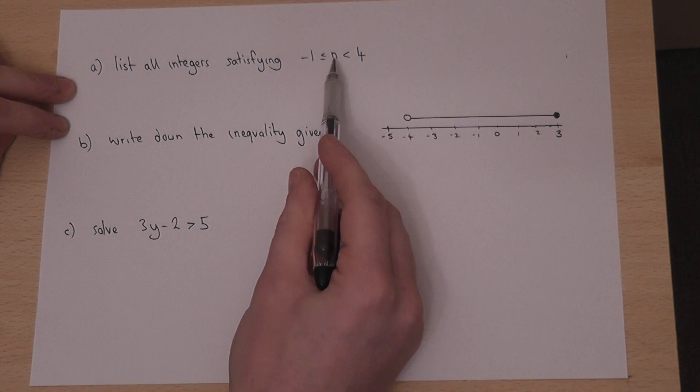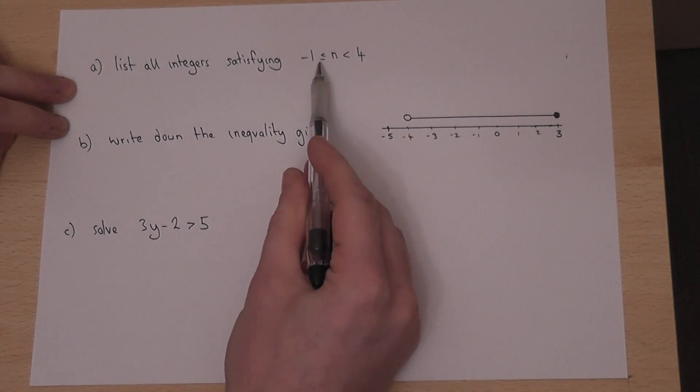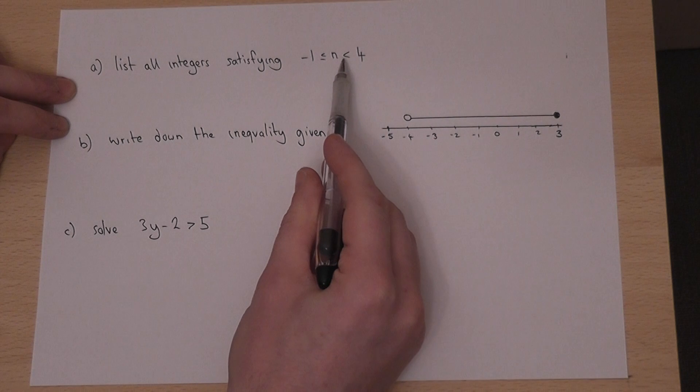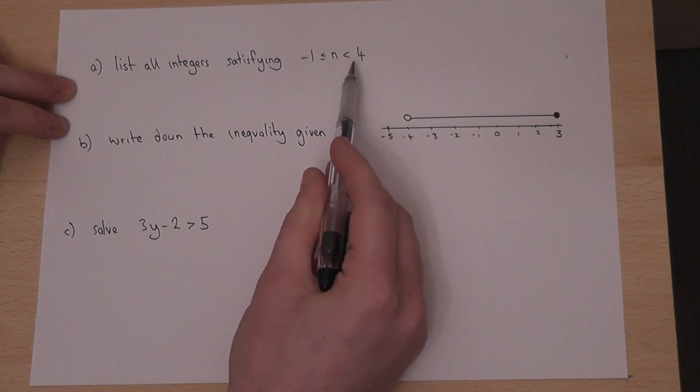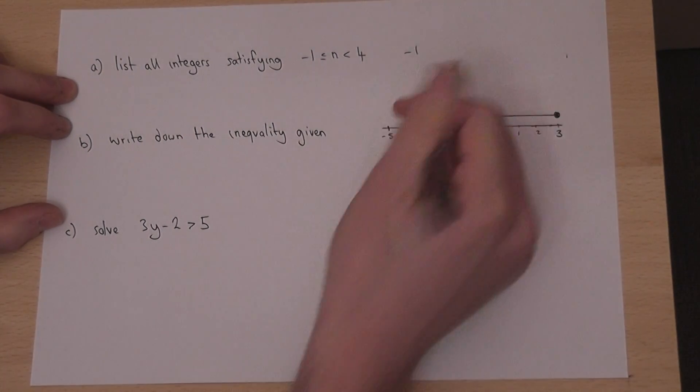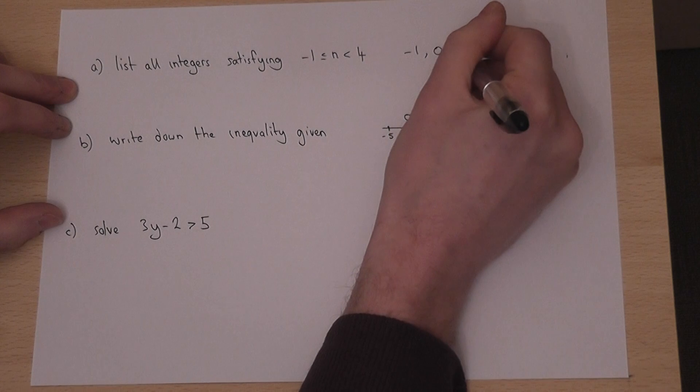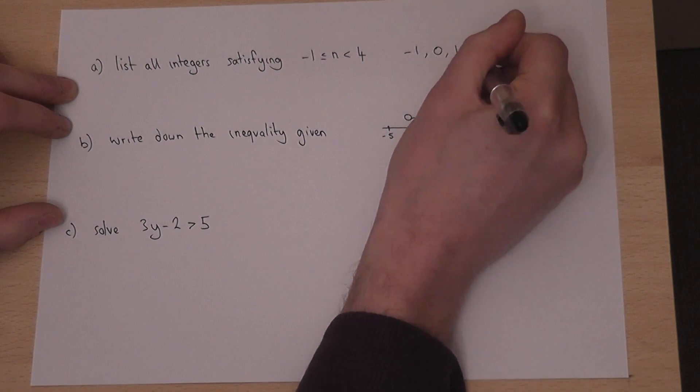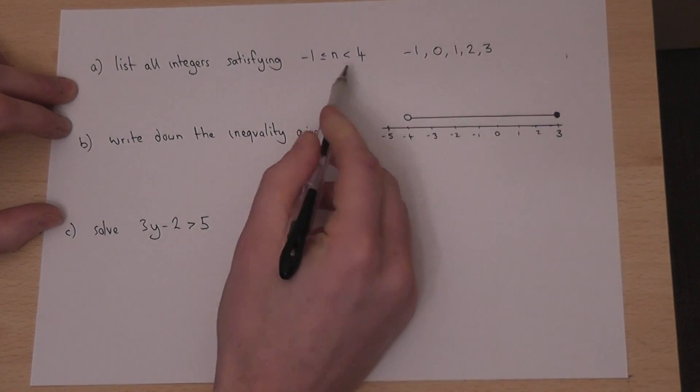Now n lies between minus 1, including minus 1, and 4, but not including 4. So the whole numbers which satisfy this are minus 1 (because I can include minus 1), then 0, then 1, then 2, then 3, but I don't include 4.